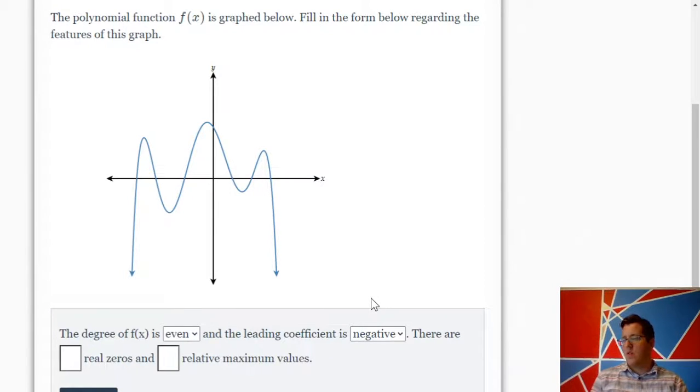There are 1, 2, 3, 4, 5, 6 real zeros, and 1, 2, 3 relative maximum values. A relative maximum is like a turning point where it goes up and then back down again.